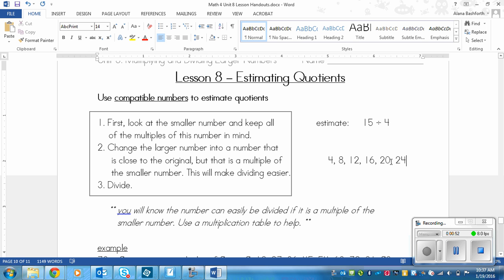So keep thinking of those. And you could see that on a multiplication chart. Then what you need to do is look at the larger number and see which multiple of the smaller number it's closest to. And then change it to that one. So 15 is closest to 16. That's only one away. So we're going to change 15 to 16 for purposes of estimating.